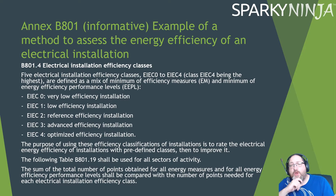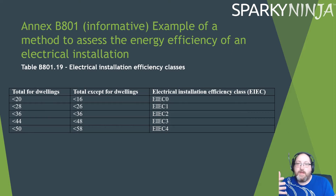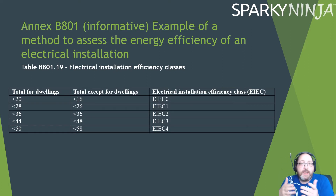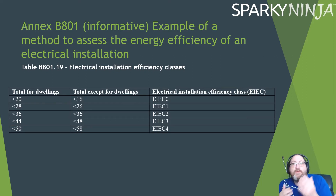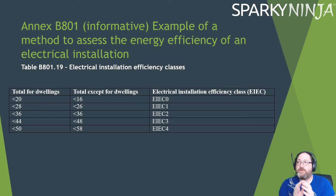EIEC zero is 'very low' and EIEC four is 'optimized.' The purpose is to rate the electrical energy efficiency of installations with predefined classes and then work to improve it. For dwellings, a total score of less than 20 — from lots of zeros and ones — gives EIEC zero; a score over 50 from lots of fours and threes gives EIEC four. The scoring differs between dwellings and other sectors, and this final table is your overall score sheet.